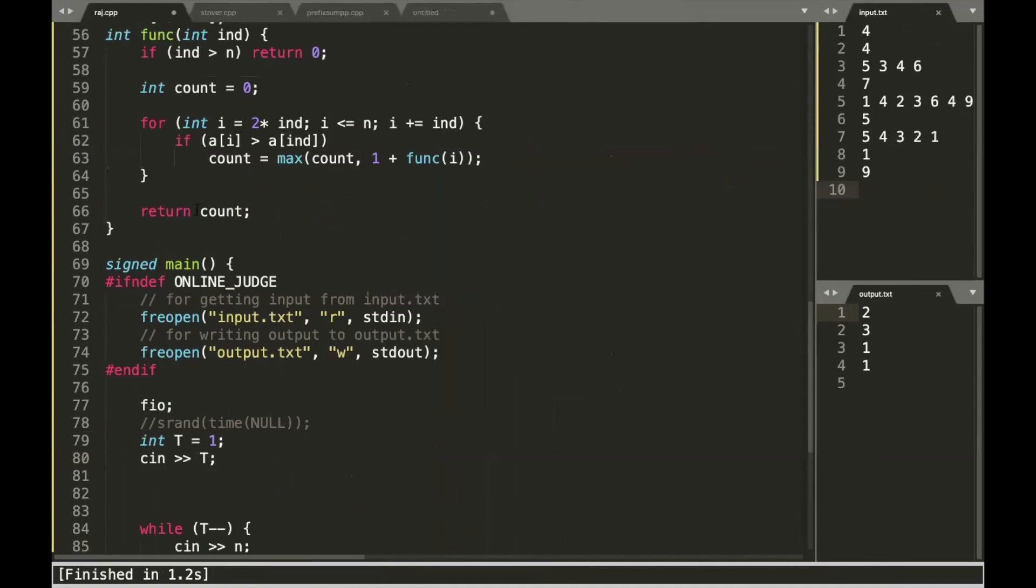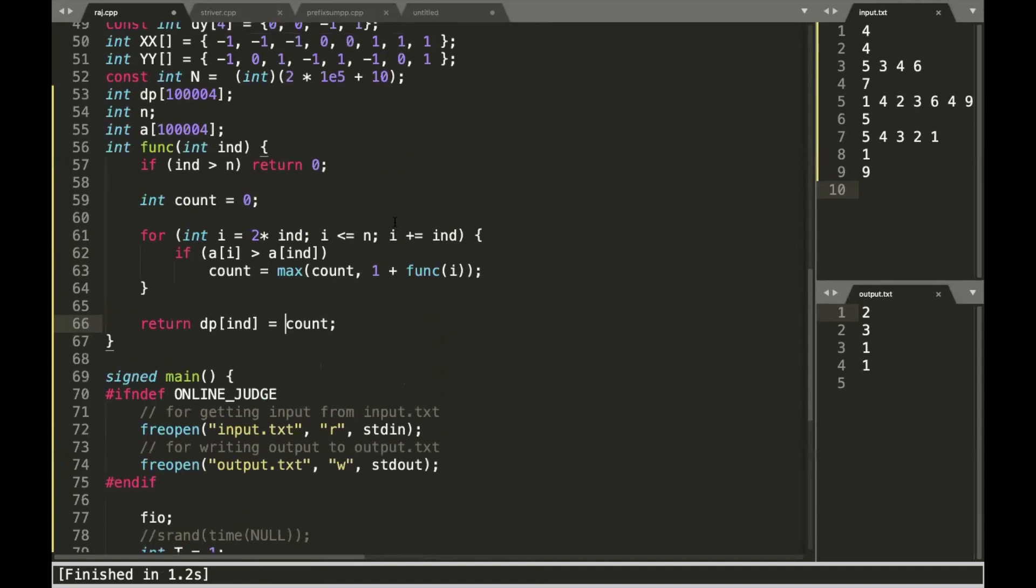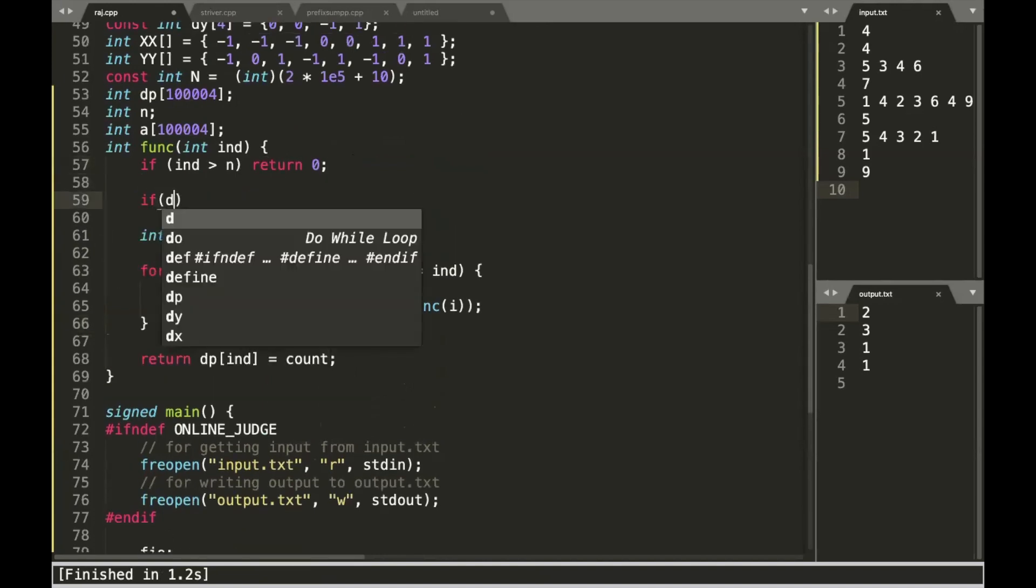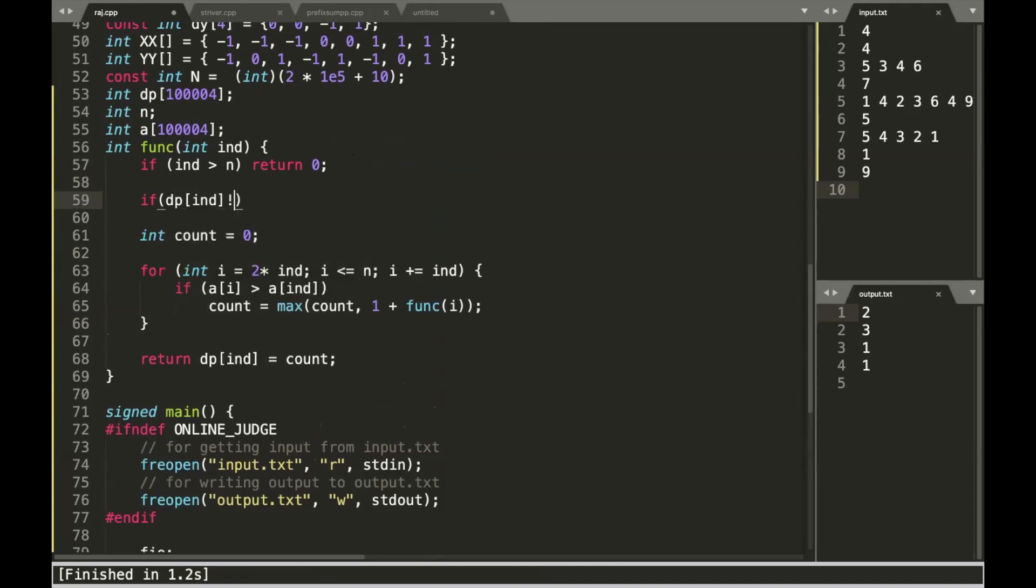You come back over here and whenever you're returning, just add this. Before returning, memoize it. That means you're hashing it or storing it. And over here, check out if the DP of index has been previously visited. If yes, what you do is you return that DP of index. That's it. And your exponential code. So we can see that the complexity from 2 to the power 10 to the power 5 suddenly boils down to n log n.